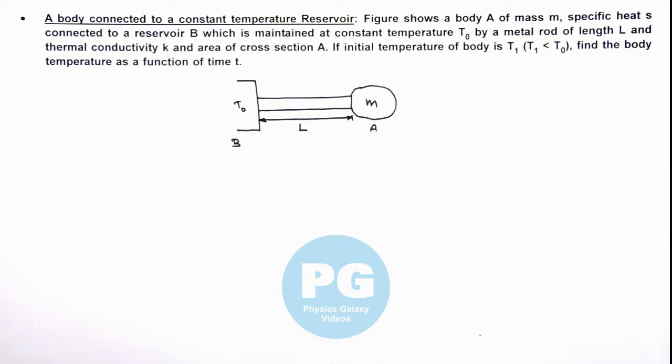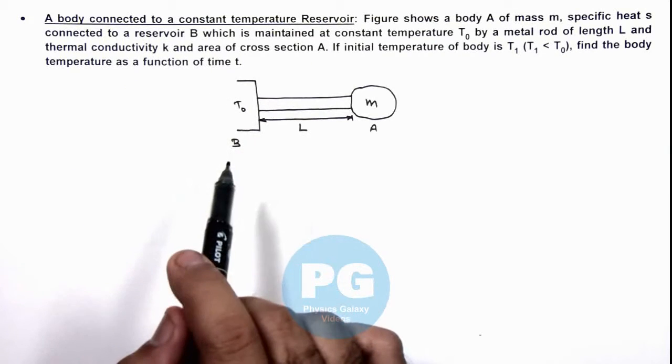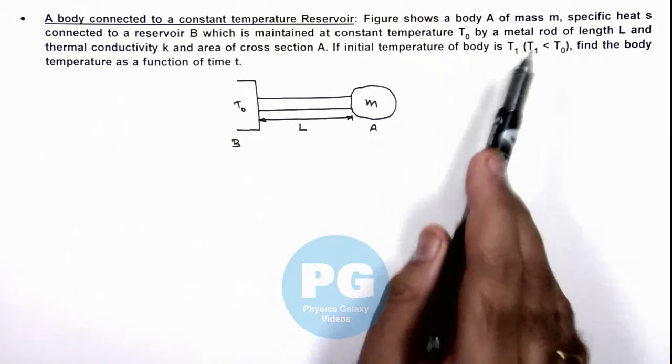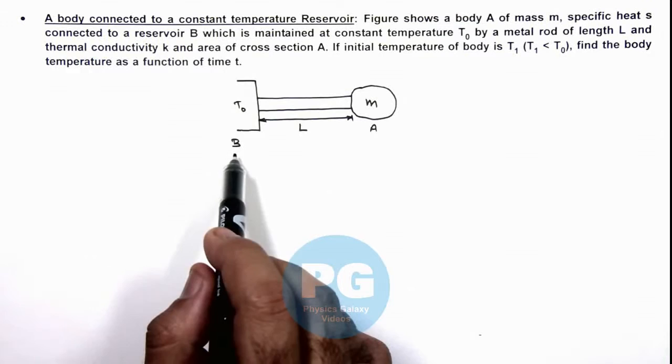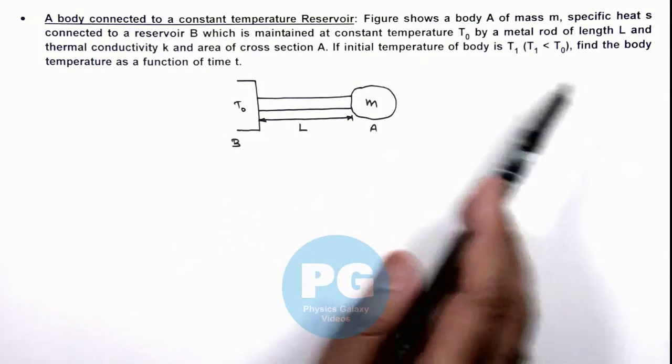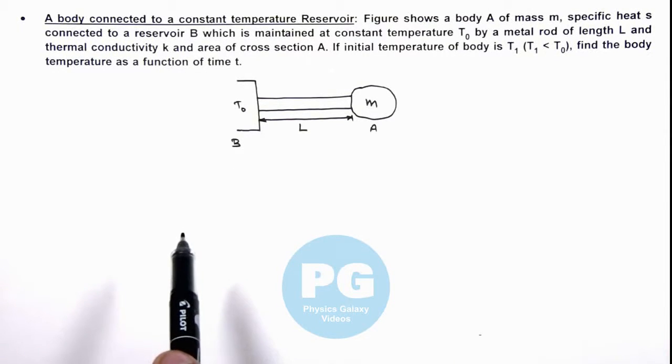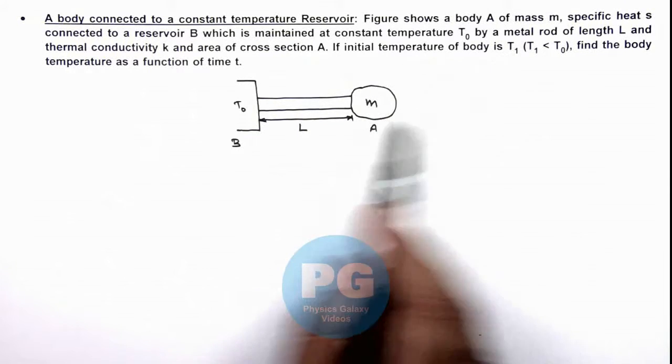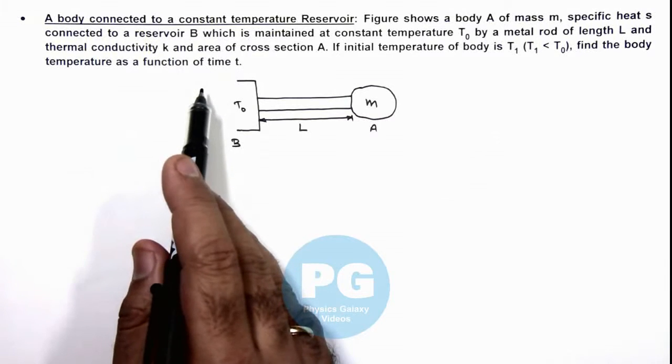In this illustration we'll discuss a body connected to a constant temperature reservoir. The figure shows a body A of mass m, specific heat s, connected to a reservoir B which is maintained at constant temperature T₀ by a metal rod of length L, thermal conductivity k, and area of cross section A. If initial temperature of body is T₁, which is less than T₀, we are required to find the body temperature as a function of time.